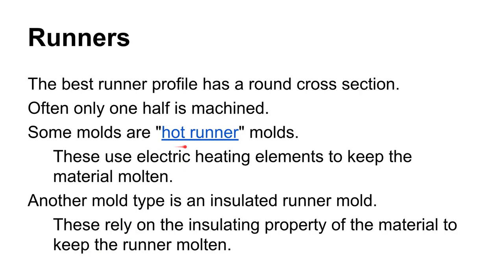The runners carry the plastic from the sprue through to the gates of each cavity in the mold. If you have multiple cavities, each one is fed by at least one runner. Runners are done in different profiles — a rounded cross section is probably the best, but it requires machining both sides of the mold so they come back together. Sometimes only one half of the mold is machined, so the runner is only in one half, and a lot of times you'll see a trapezoid shape for the cross section of a runner.